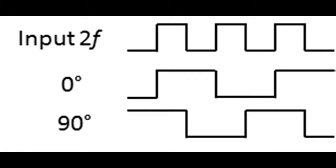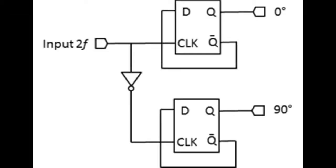You feed your original double frequency clock into two devices, the first one receives the original clock and the second one receives the inverse of the clock. And these two devices, these boxes that you see here are called T flip-flops.